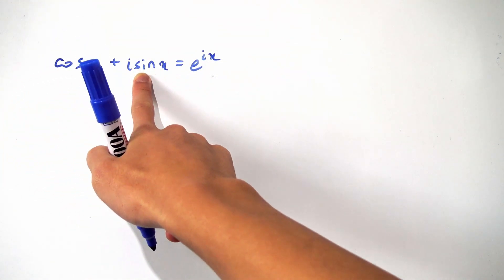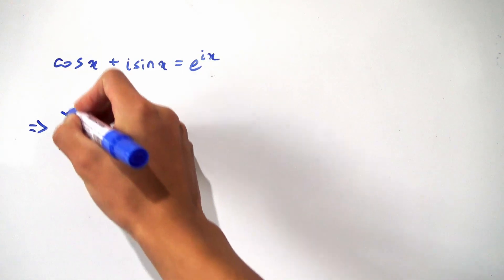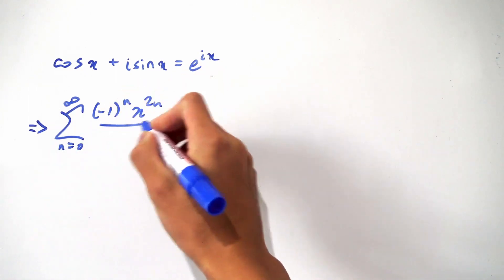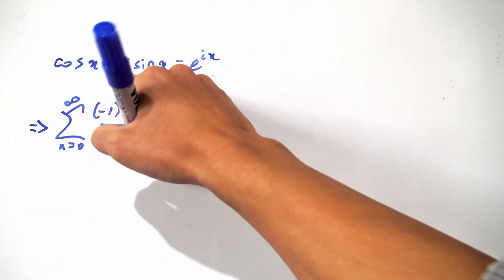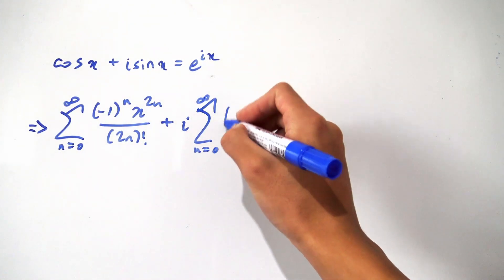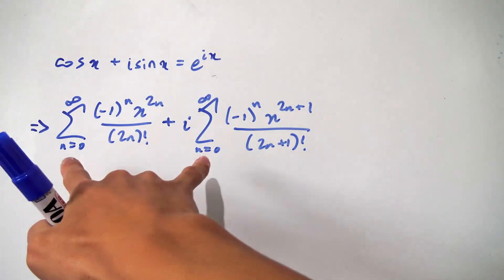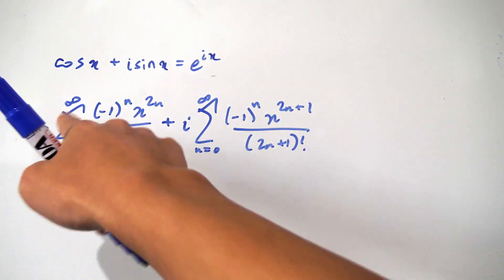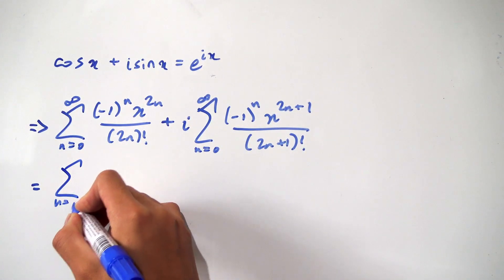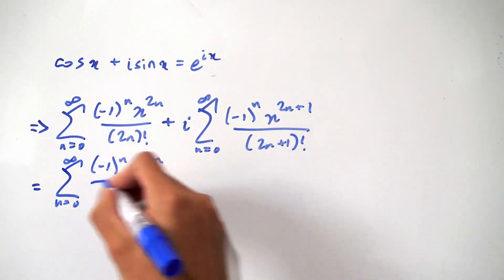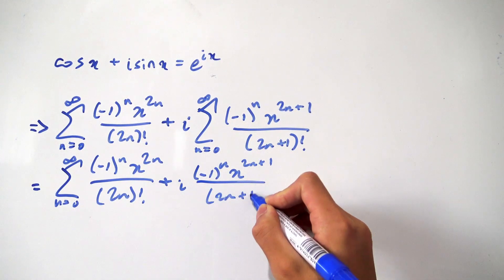Let's convert cosine and sine into their respective Taylor series expansions. For cosine, it can be written as a sum running from n equals 0 to infinity of negative 1 to the n, times x to the 2n over 2n factorial. Now we add i times sine, and sine can be represented as a sum from 0 to infinity of negative 1 to the n, times x to the 2n plus 1 over 2n plus 1 factorial. Since both sums run from 0 to infinity, we can rewrite them as one giant sum: the sum from 0 to infinity of negative 1 to the n times x to the 2n over 2n factorial, plus i times negative 1 to the n times x to the 2n plus 1 over 2n plus 1 factorial.